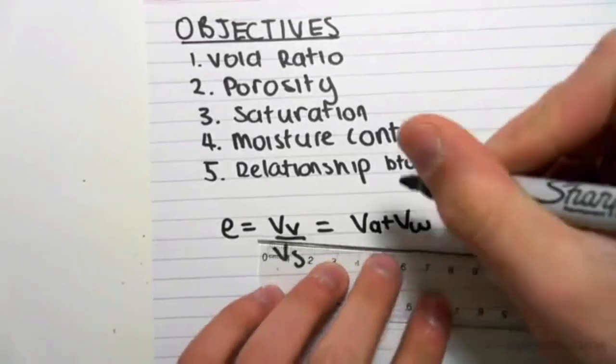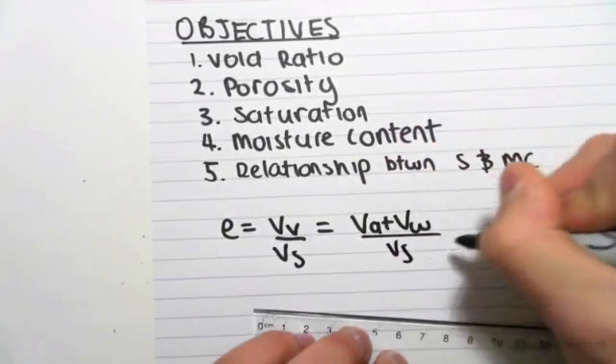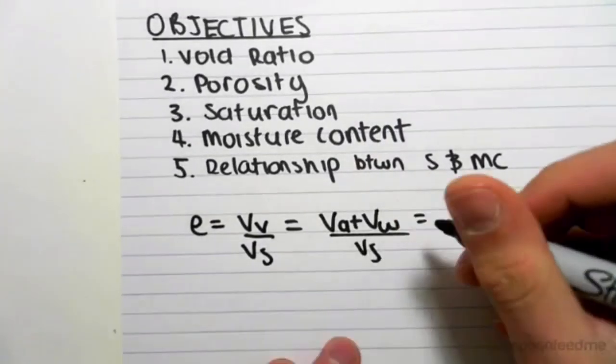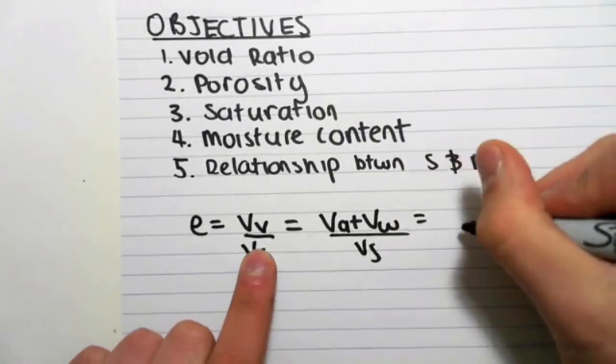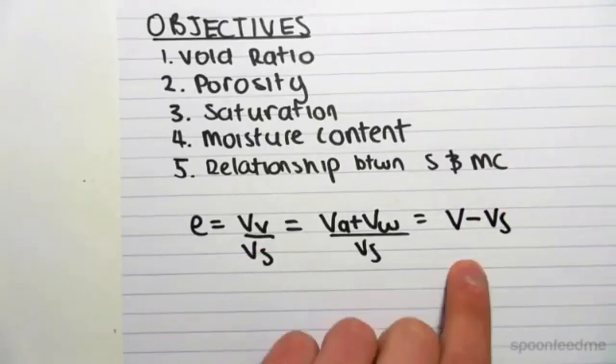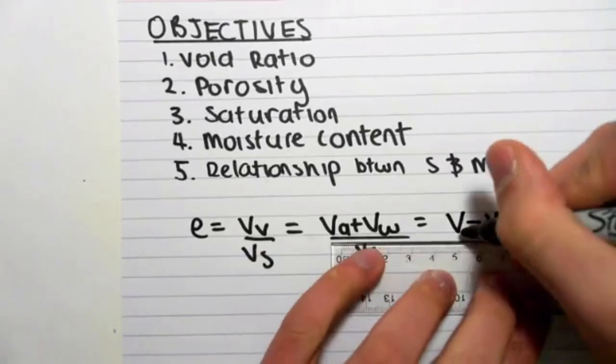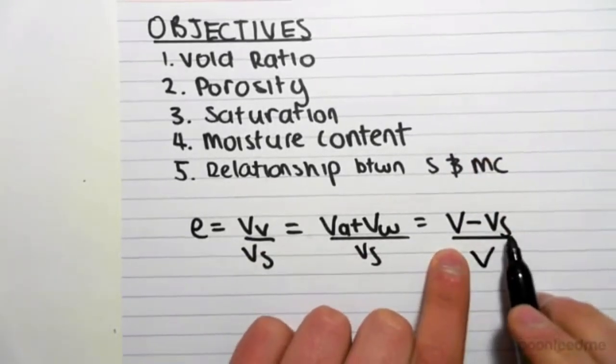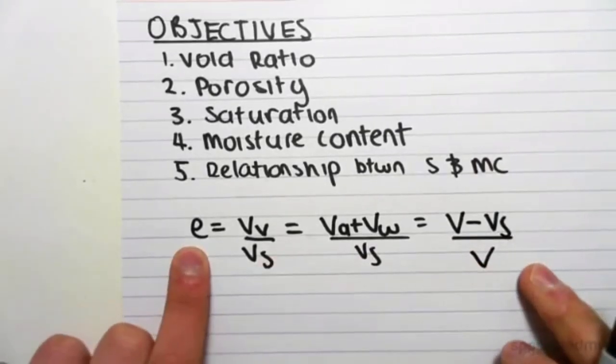That's still over the volume of the solids. Something else which is quite neat, this comes up a bit, is to notice that we can rewrite the volume of the voids as the total volume minus the volume of the solids. Just keep this relationship in mind because it does come up sometimes when you're only given the total volume and the volume of the solids. You can still find the void ratio.